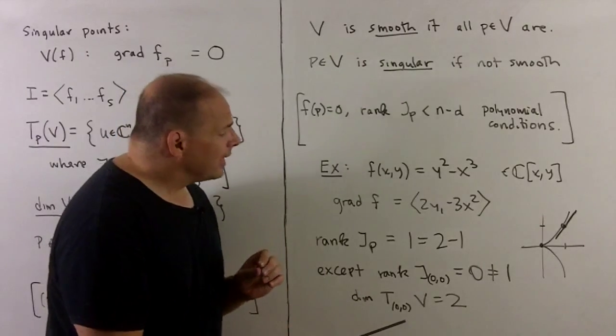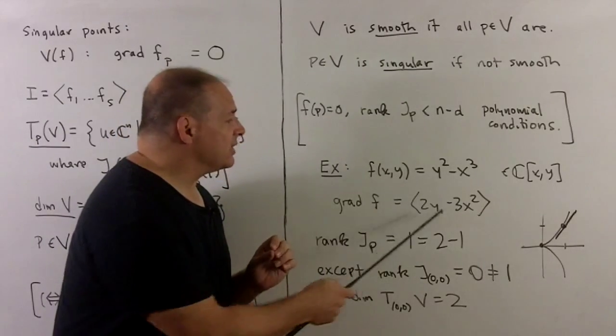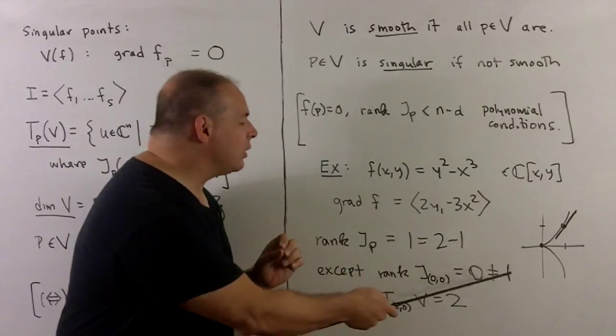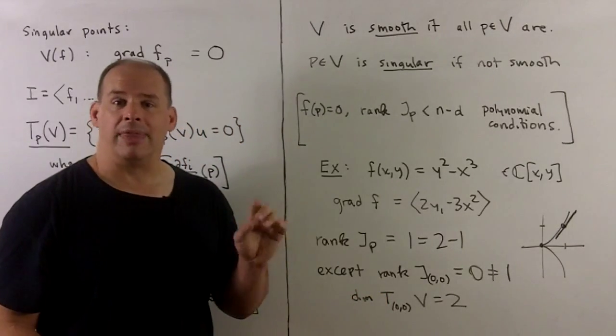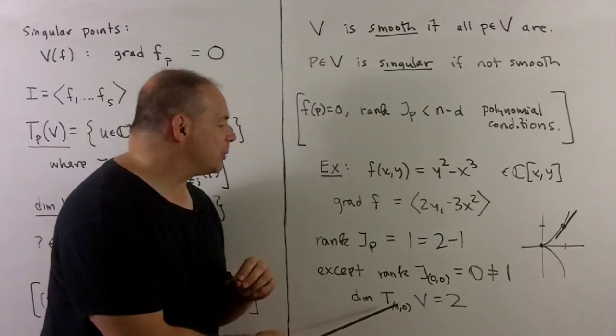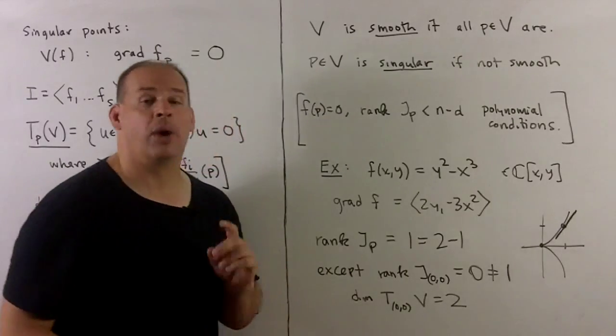On the other hand, at the origin, the rank equals zero, which is not equal to one. So (0,0) is our only singular point. And there, we also note the dimension of the tangent space is equal to two—so everything.